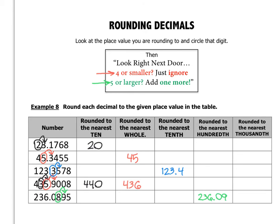Finally, rounding 236.0895 to the nearest thousandth: the thousandths digit is 9. To the right is a 5 — five or larger, add one more. But adding one more to 9 gives 10, so I carry the 1 to the next place, which is 8, making it 9. So rounding to the nearest thousandth I get 236.090. This is the same as 236.09, but I include the trailing zero to show I've rounded to the thousandths place.